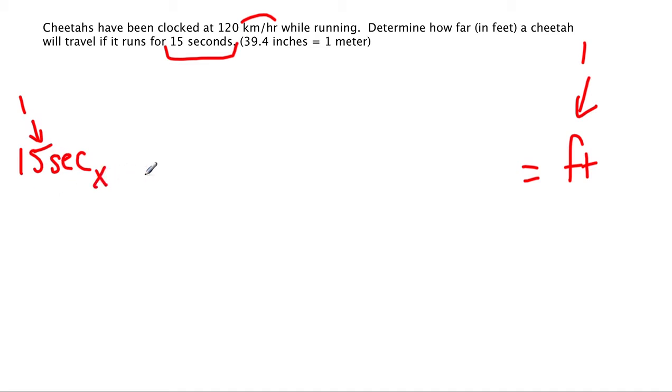All right, 15 seconds. We want to get all the way over to feet. So we're going to first cancel out seconds. Now what do we know about seconds that's going to tie us into this problem? Well, we know we have hours in our conversion factor. So let's convert seconds to hours. We know that 60 seconds equals one minute. There goes my seconds.